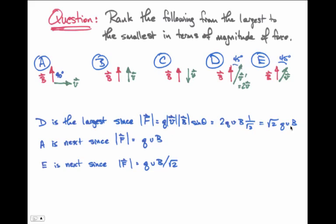The next largest is E. E has a magnitude of Q times V times B divided by the square root of two, where that last divided by the square root of two comes from the fact that it's the sine of 45 degrees between the B field and the velocity vector.